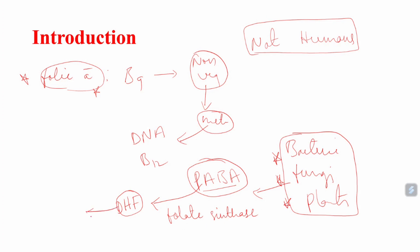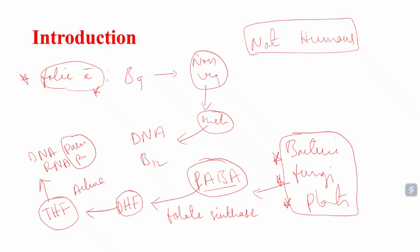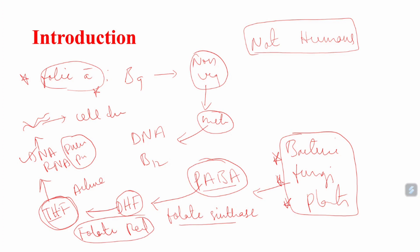This dihydrofolate is converted into tetrahydrofolate. Tetrahydrofolate is the active form, and it is useful for synthesizing DNA, RNA, purines, and pyrimidines — which are the basic building blocks of DNA and RNA. This conversion from dihydrofolate to tetrahydrofolate occurs in the presence of folate reductase enzyme.